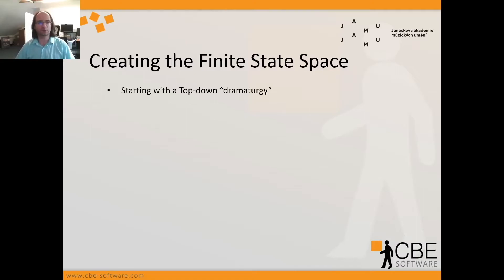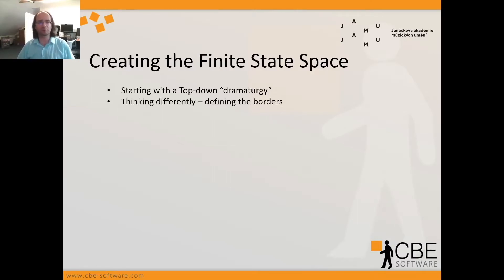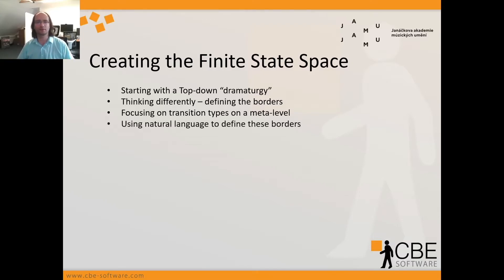My advice is to start with top-down dramaturgy — basically you start with an overview, with some sense of what the space for the music is and how we can define it. We have to think differently: we have to start by defining the borders where the adaptive music exists and where it does not. My advice again is to focus on transition types at some meta level — define them in different words than just 'let's transition from part A to part B.' We should find names for that, use natural language to define these borders, because as soon as it starts adapting, it's very hard to backtrack it and understand if it's doing the right thing.